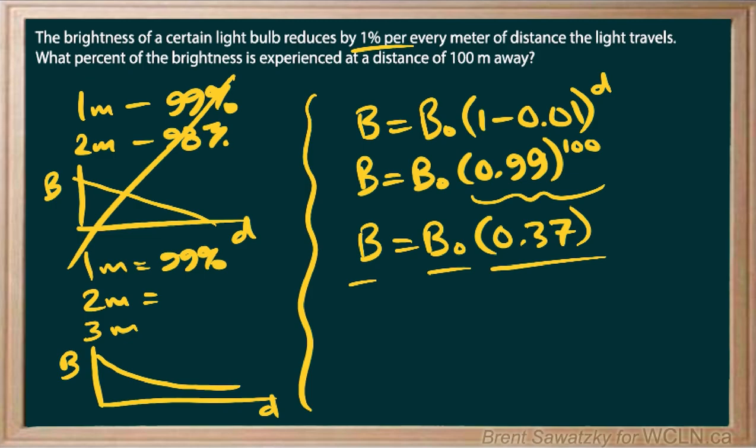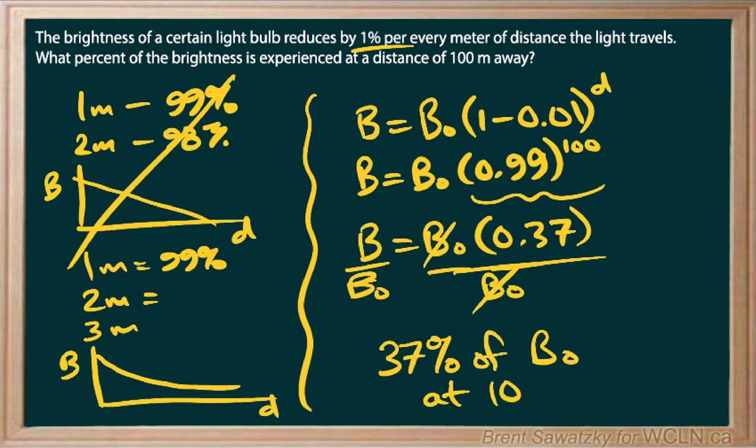Some people might stop and say, let's just write that as a ratio. So divide by B₀, divide by B₀. And the B to the B₀ is 0.37 or 37%. So whichever way you want to look at it is fine. But we do know that 37% of the original brightness at 100 meters. And that would be our conclusion.